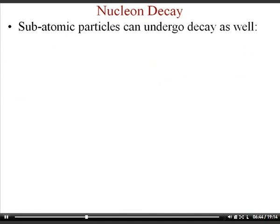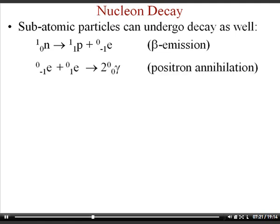Subatomic particles can also undergo decay. A neutron can produce a beta particle and turn itself into a proton — one of the quarks changes from a down to an up (or vice versa). In positron annihilation, a positron collides with an electron and converts to pure energy (a couple of gamma rays). In positron emission, a proton turns into a neutron and creates a positron. So neutrons can become protons, and protons can become neutrons.